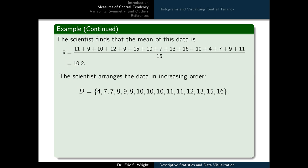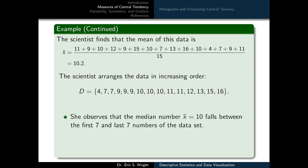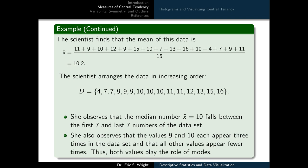To compute the median, the scientist arranges the data in increasing order and observes that the median x̃ equals 10, falling between the first 7 and last 7 numbers. She also observes that both 9 and 10 each appear three times in the dataset, while all other values appear fewer times. Thus both values play the role of modes.